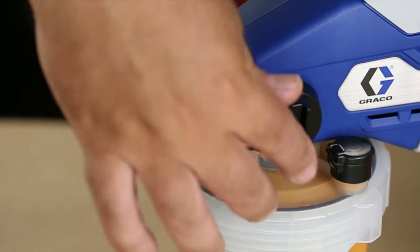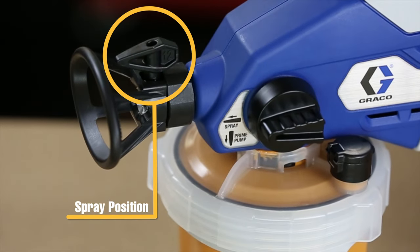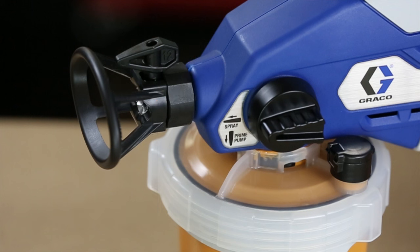Turn the prime pump spray knob forward to the spray position. Make certain the spray tip is fully installed and locked into the spray guard and pointed in the spray position. You are now ready to spray.